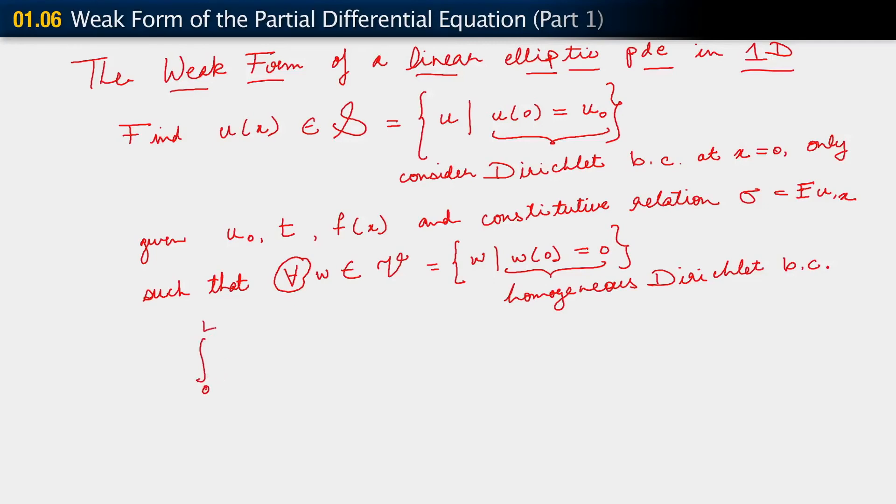Integral 0 to l, w comma x sigma dx equals integral 0 to l, w f dx plus w at l, t. All right? Essentially, what I've done is go to an integral form. This is our weak form.